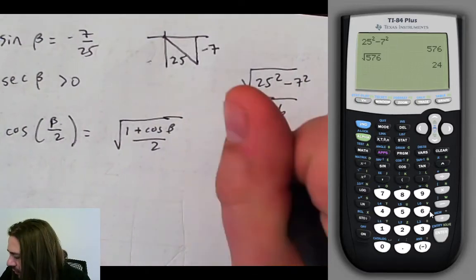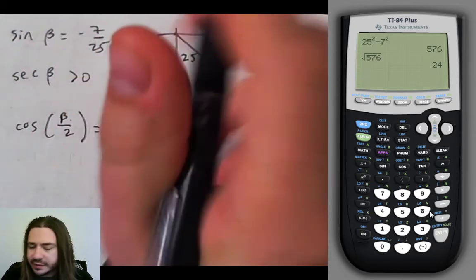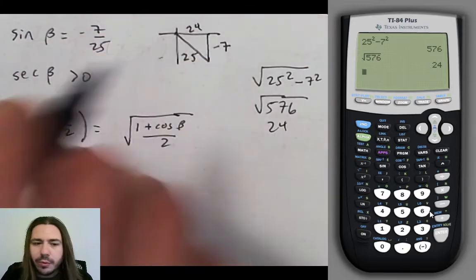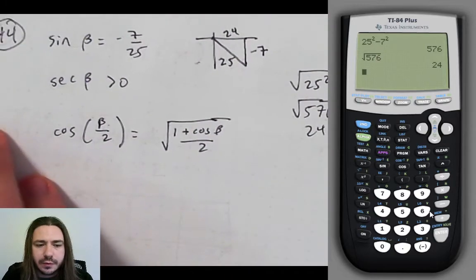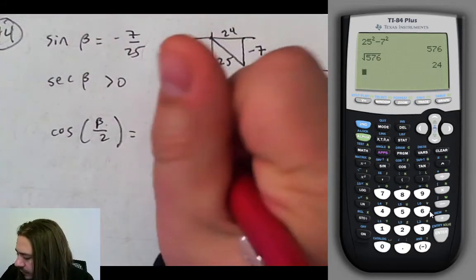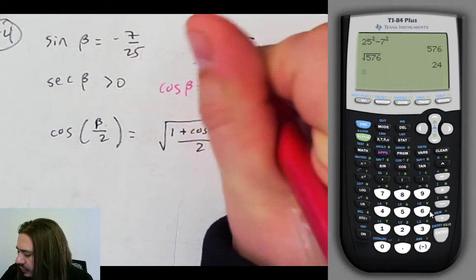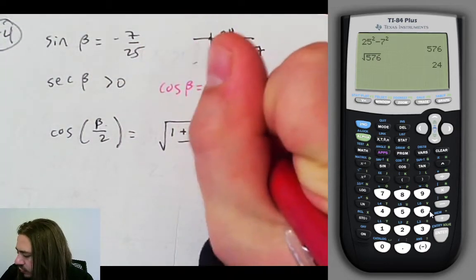oh, look at that, 24. So that means that this side is going to be 24. And now we can identify what cosine is. Right? Cosine of beta is adjacent over hypotenuse. So that would be 24 over 25. And we're going to use that inside this formula.